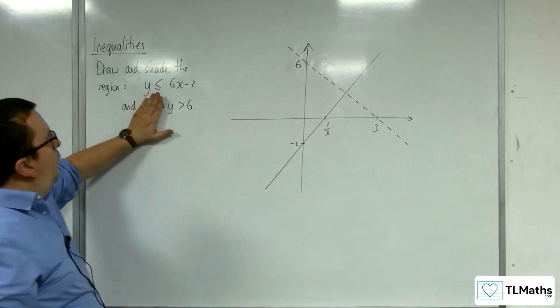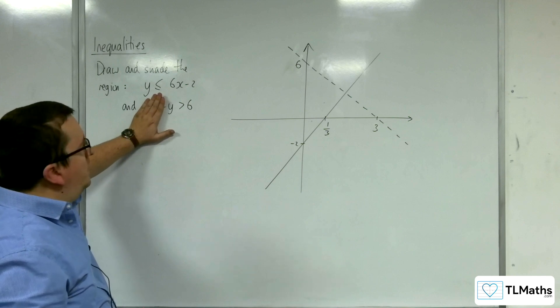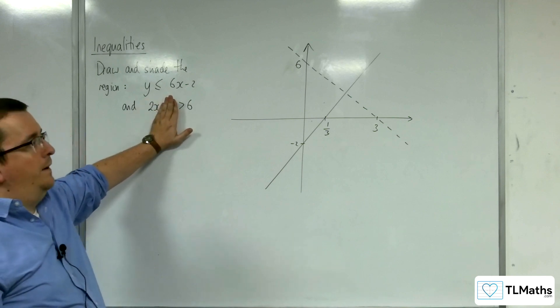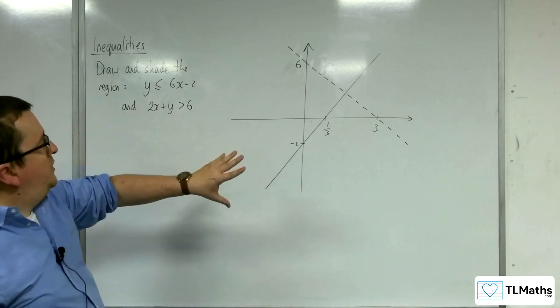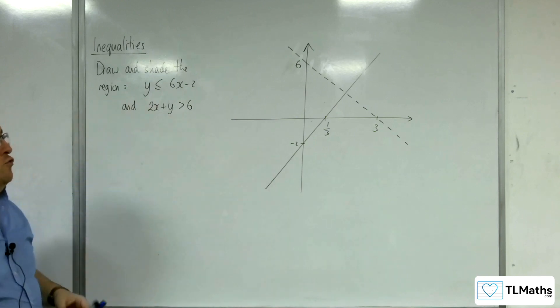Okay, so when x is 0, y is 6, and when y is 0, x is 3. Okay, so they're the two lines, now we need to get the correct region.